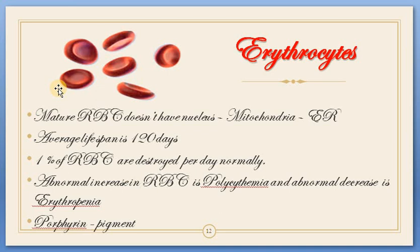The second organelle is mitochondria. Mitochondria is responsible for cellular respiration. If mitochondria is present in an RBC, the RBC will use up the oxygen it is supposed to transport. It's like if you ask someone to carry a thing from one place to another, and that person is consuming it — the efficiency goes low. So there is no mitochondria in the RBC, so that the RBC will not utilize oxygen for itself but will give it completely to other cells.